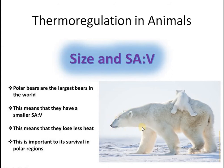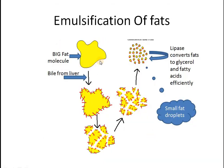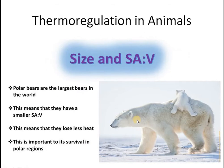Whenever the surface area to volume ratio is less, the heat lost by the body is less. That is what the polar bear wants — to lose less heat into the environment so that it can survive in extreme cold. For that reason, its body size is bigger. Just like that large droplet of fat, the polar bear is bigger in size so its surface area to volume ratio is less. This is beneficial for the animal — less heat is lost into the environment, letting it survive in the arctic regions where there is extreme cold.